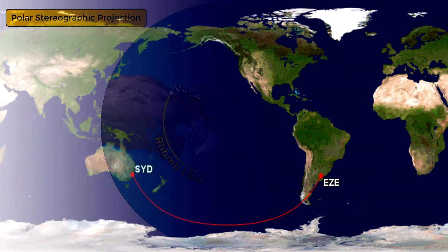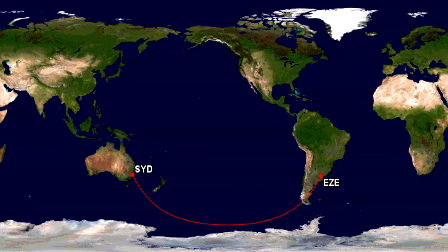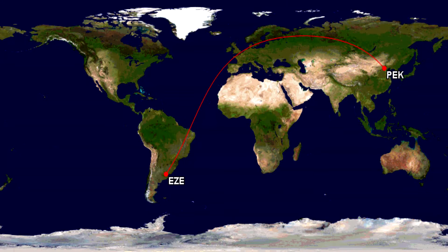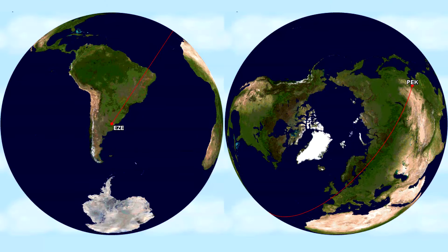For example, the great circle route between Buenos Aires and Sydney is represented as a curved line that passes close to the south pole on a Mercator map. However, in a three-dimensional representation of the Earth we can clearly see that it is the shortest route between these cities. The same happens with the route between Buenos Aires and Beijing, which curves in a strange way on a Mercator projection, but in the 3D model it is clearly the shortest route.